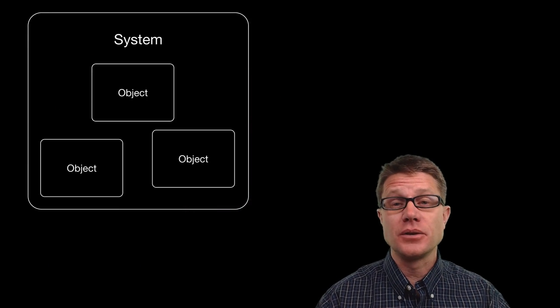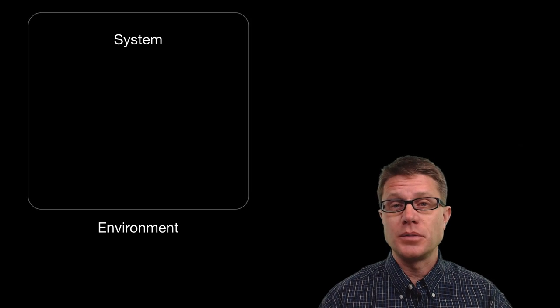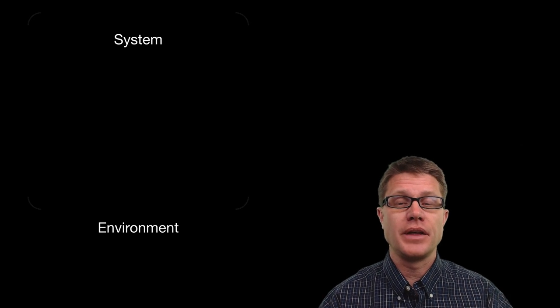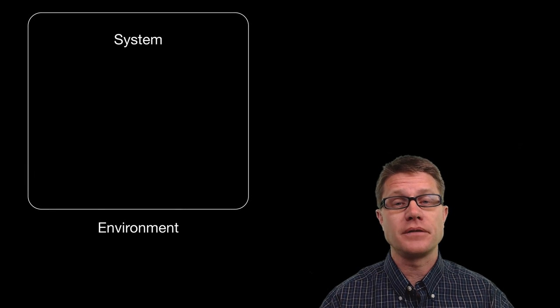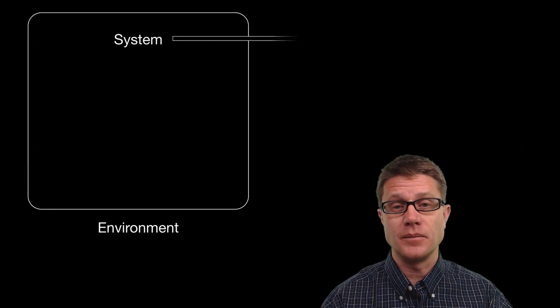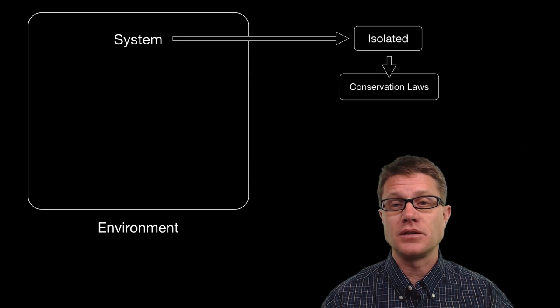A system is a series of two or more objects that are separated from their environment. And if there is no boundary between the system and the environment we call that an open system. In order for the conservation laws to apply we have to have a closed system or an isolated system.